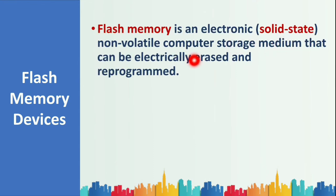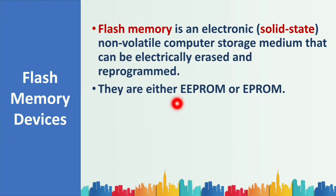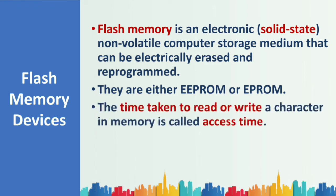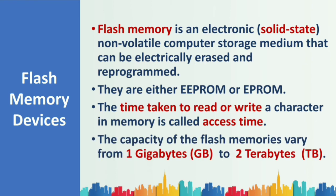Flash memory is an electronic solid-state non-volatile computer storage medium that can be electrically erased and reprogrammed. Non-volatile means it is a permanent storage device. These devices can be either EEPROM or EPROM type. Flash memory offers fast access time — the time taken to read or write a character in memory — and its capacity varies from one gigabyte to two terabytes.